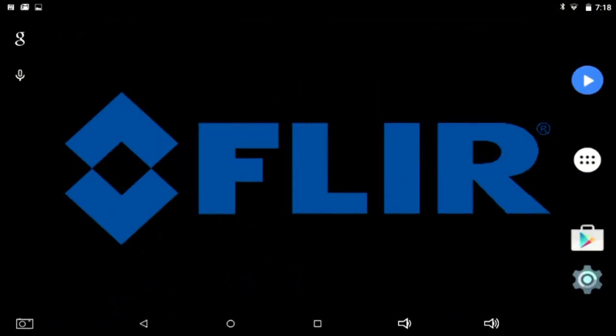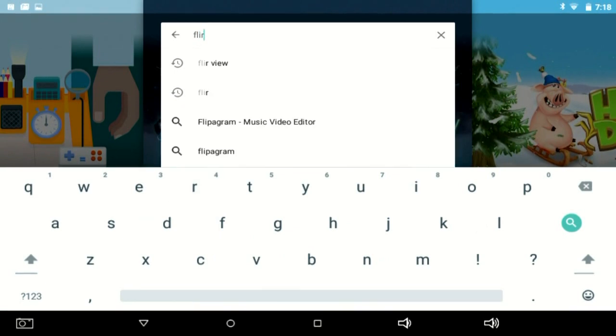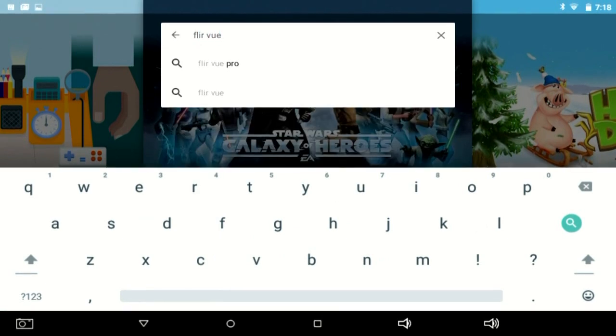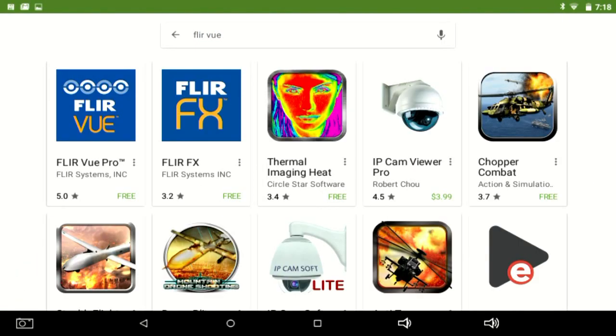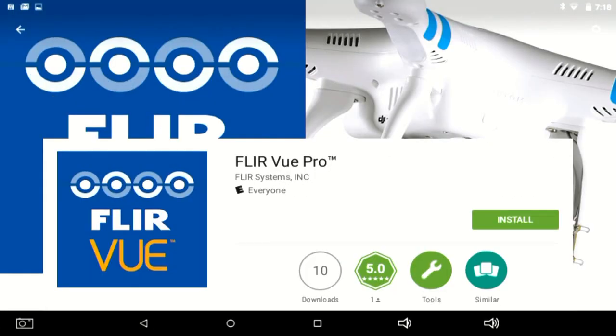For the Android platform you want to go to the Google Play Store. Then in the search query, type in FLIR VUE and search. First thing right there, the FLIR VUE app. Tap on that, it's free, and install.